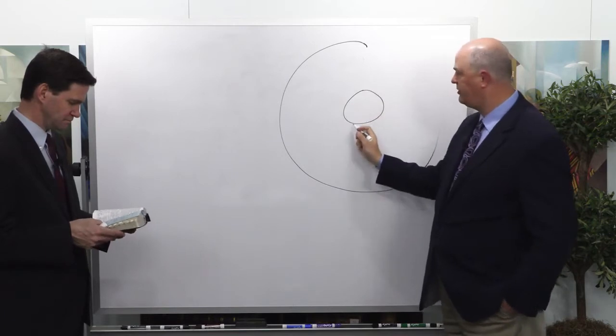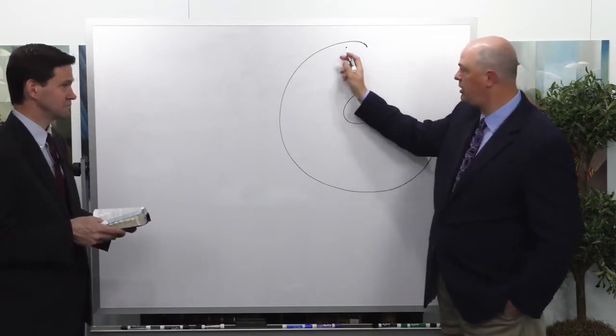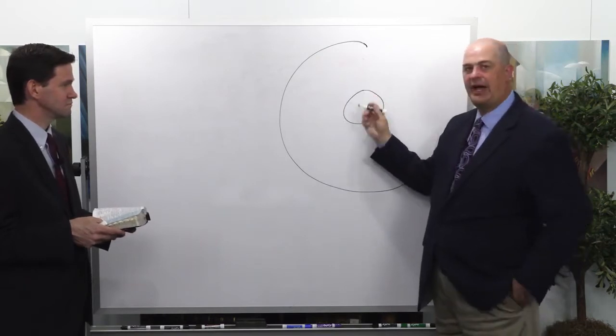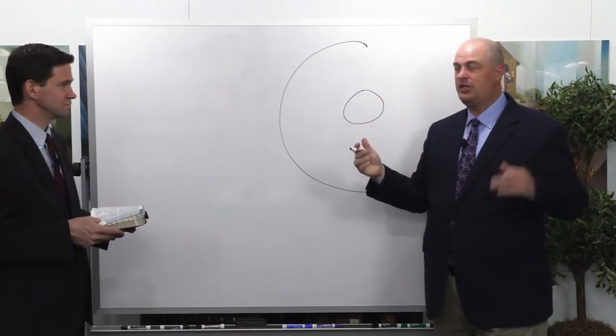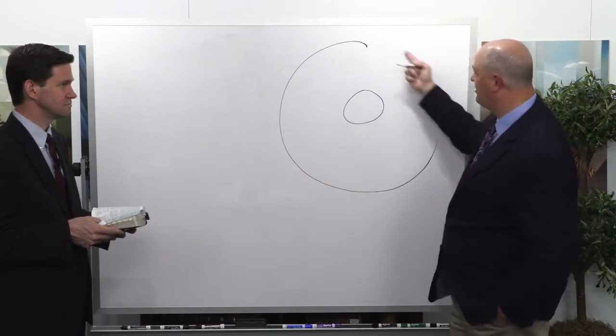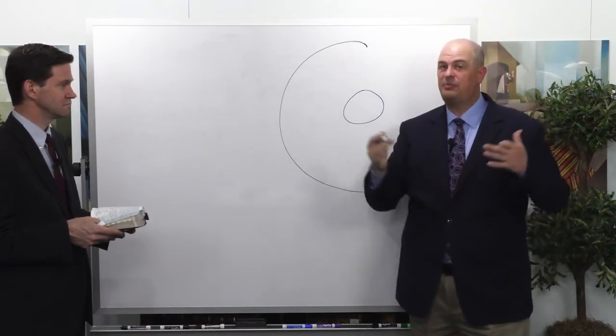Now what you notice, the circumference of this circle is much smaller than this circumference. It turns out that as you gain knowledge and wisdom, the circumference of your ignorance, the surface area of the ignorance that you're now touching, has actually expanded.